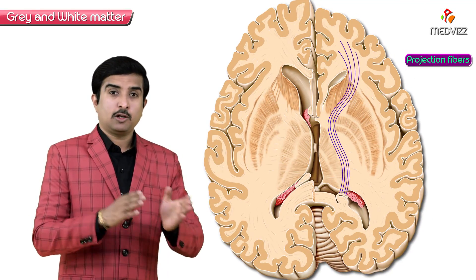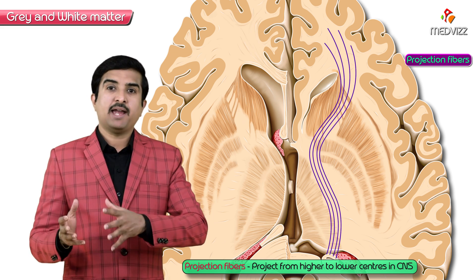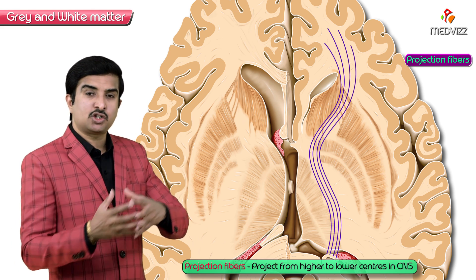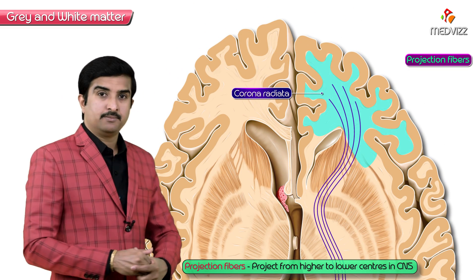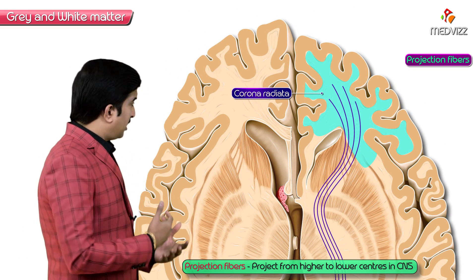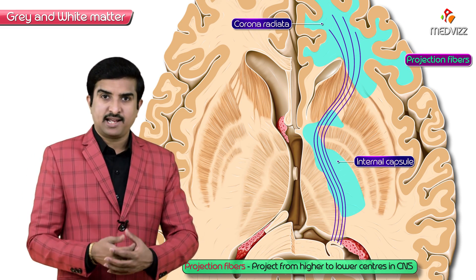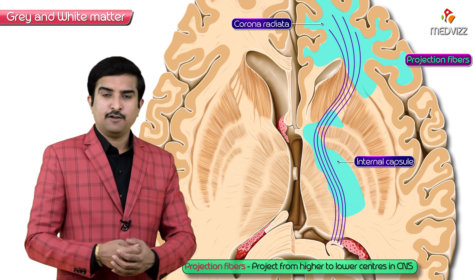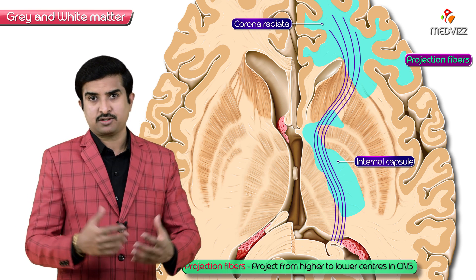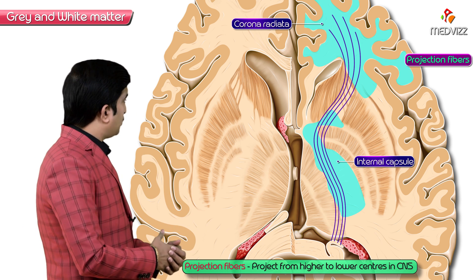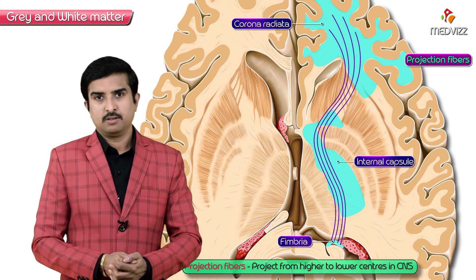Projection fibers project from higher centers to lower centers, or from lower centers to higher centers of the CNS. The best examples are the corona radiata and internal capsule, which both contain ascending and descending tracts that carry and receive information between the body and the brain. The fimbria is another example of a projection fiber.